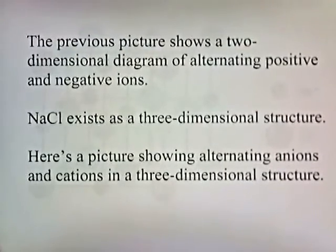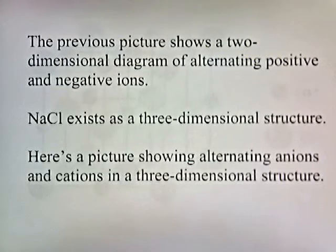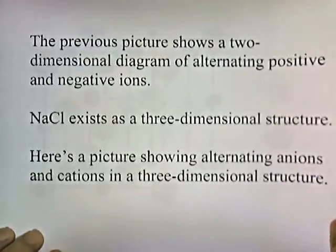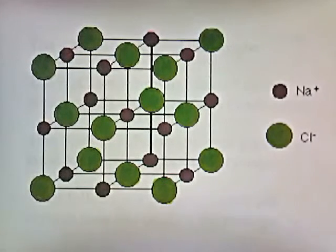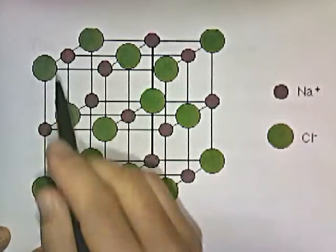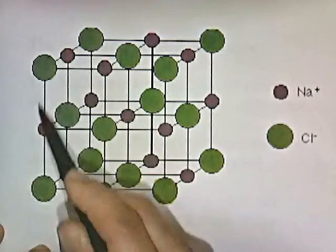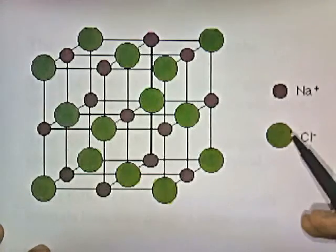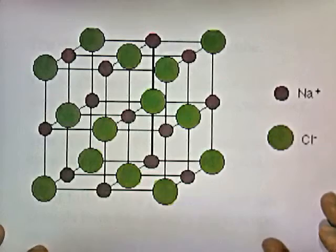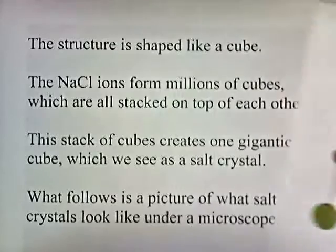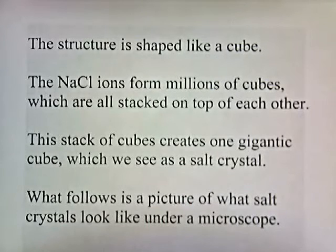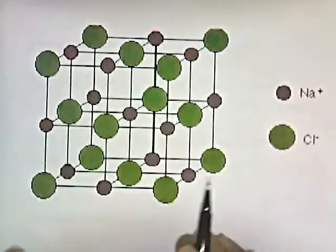The previous picture showed a two-dimensional diagram of alternating positive and negative ions. NaCl actually exists as a three-dimensional structure. Here's a picture showing alternating anions and cations in 3D. The green ones are the negative ions and the red ones are the positive ones, alternating negative, positive, negative, positive. Notice that the chlorine is drawn bigger because negative ions are always a little bit bigger. The structure is shaped like a cube, and NaCl ions form millions of cubes stacked on top of each other, creating one gigantic cube which we see as a salt crystal.